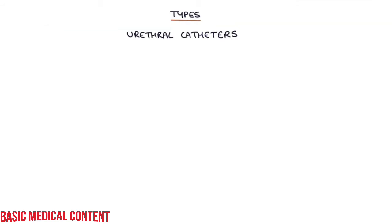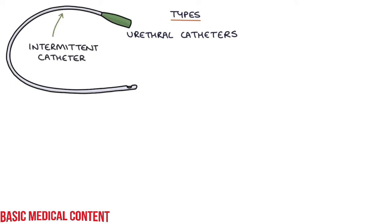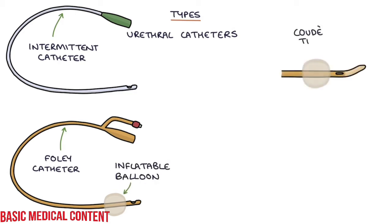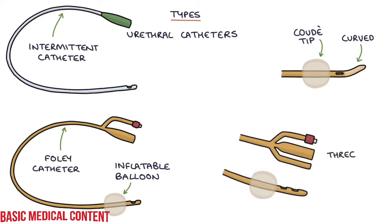Let's talk about the different types of catheter. Urethral catheters are inserted through the urethra into the bladder. Intermittent catheters are simple tubes used to drain urine and then immediately removed. A Foley catheter, also known as a two-way catheter, is the standard catheter with an inflatable balloon on the end to hold it in place. A coude tip catheter has a curved tip, which can be helpful in navigating past an obstruction such as an enlarged prostate. A three-way catheter has three tubes: one for inflating the balloon, one for injecting fluid into the bladder for irrigation, and one for draining fluid from the bladder.